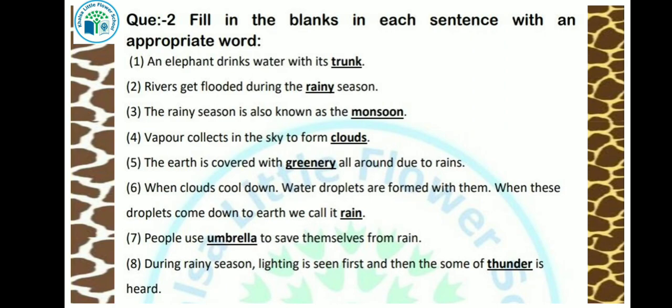Vapour collects in the sky to form clouds — answer: clouds. The earth is covered with greenery all around due to rain — answer: greenery. When clouds cool down, water droplets are formed. When these droplets come down to earth, we call it rain — answer: rain.